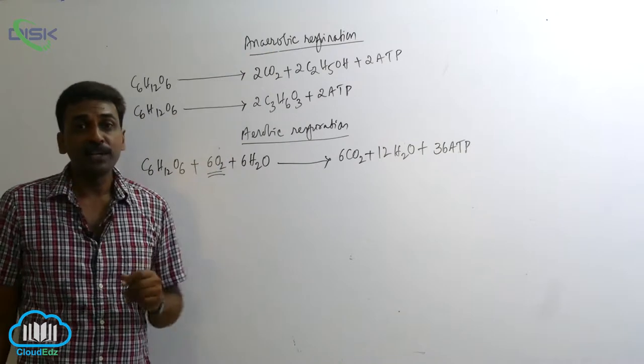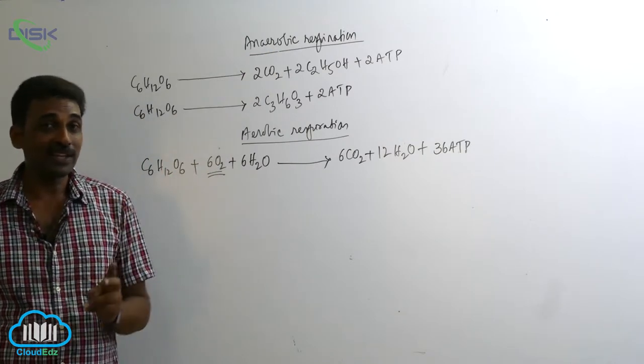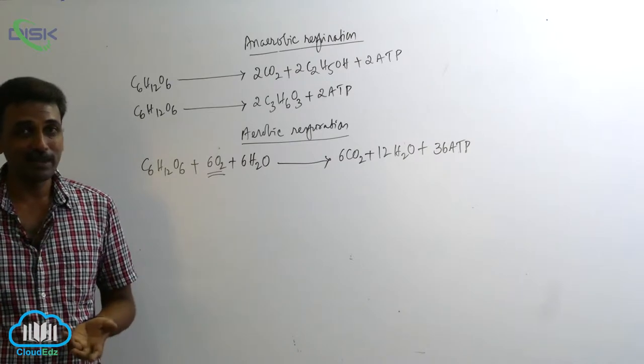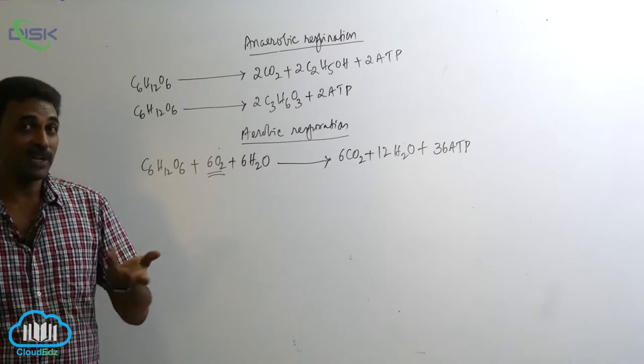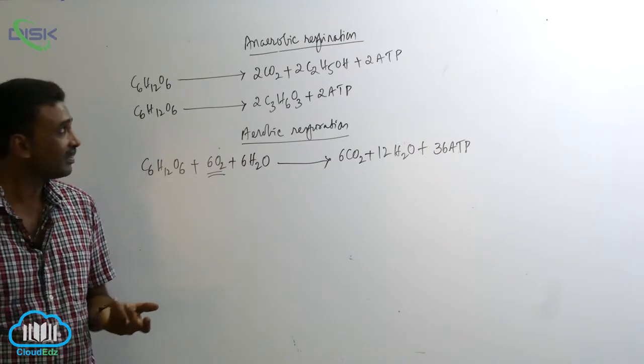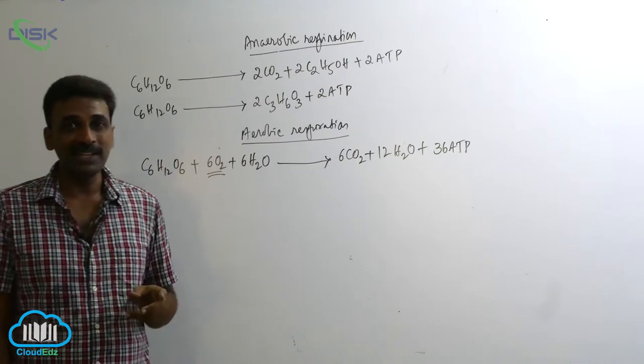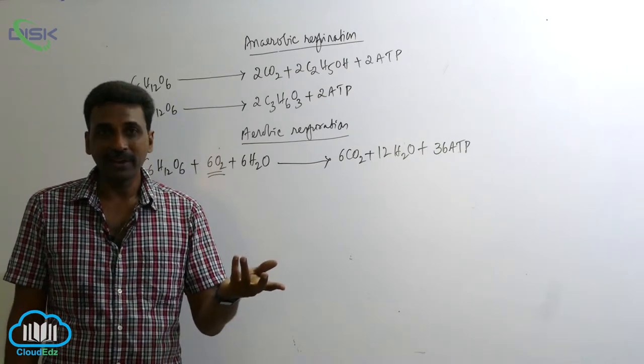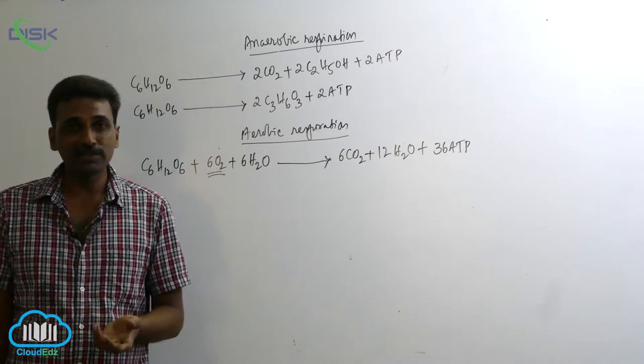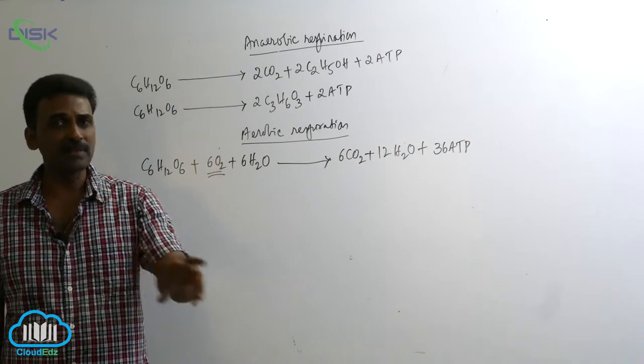Anaerobic respiration occurs in yeast, bacteria, and also some of our skeletal muscles and red blood cells of human beings. In case of human RBCs there is no mitochondria, so there is no chance of aerobic respiration—red blood cells themselves are anaerobic.